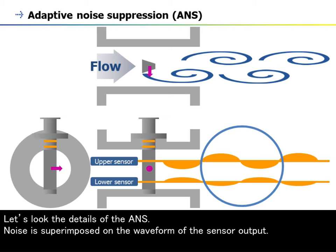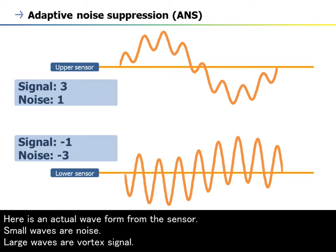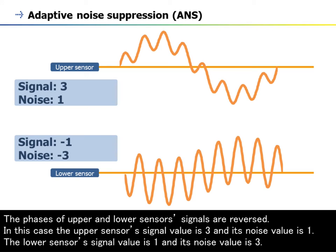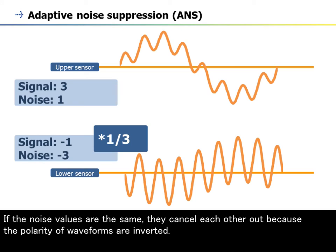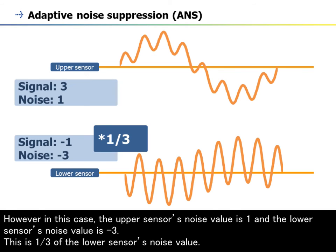Noise is superimposed on the waveform of the sensor output. Here is an actual waveform from the sensor. Small waves are noise; large waves are vortex signal. The phases of upper and lower sensors' signals are reversed. In this case, the upper sensor's signal value is 3 and its noise value is 1. The lower sensor's signal value is 1 and its noise value is 3. If the noise values are the same, they cancel each other out because the polarity of waveforms are inverted. However, in this case the upper sensor's noise value is 1 and the lower sensor's noise value is minus 3. This is one third of the lower sensor's noise value.